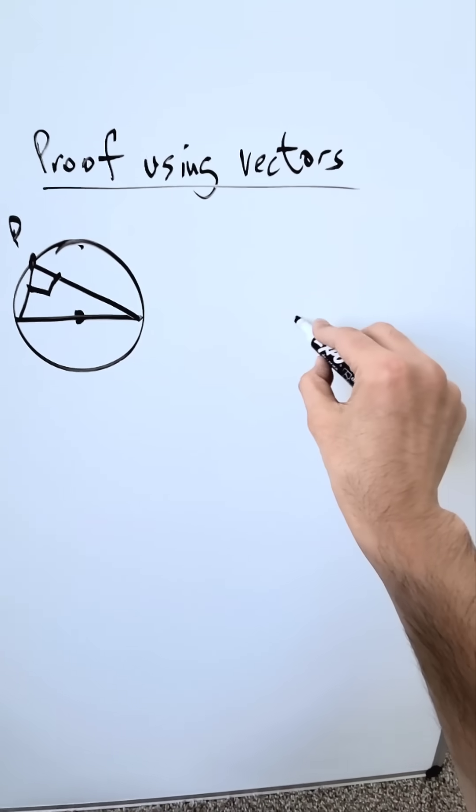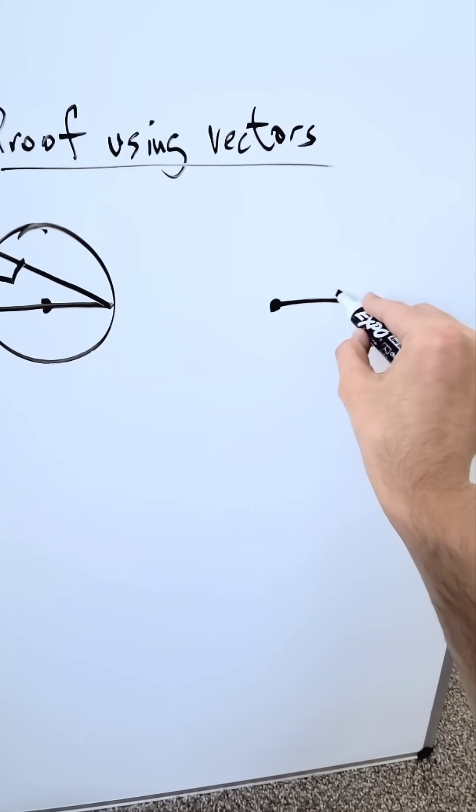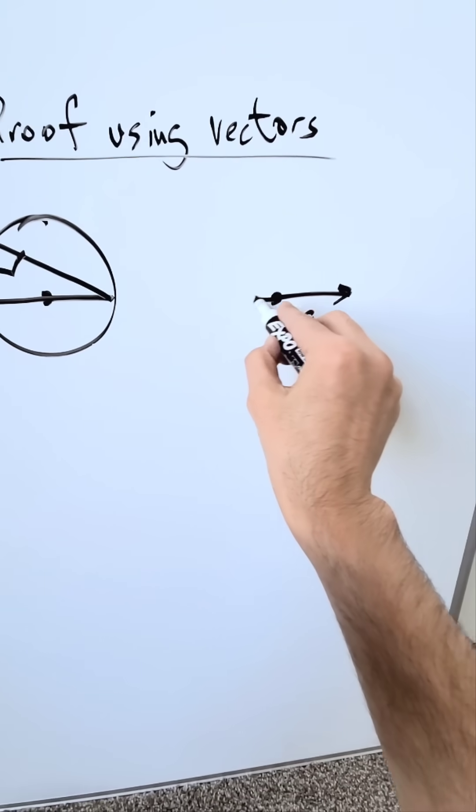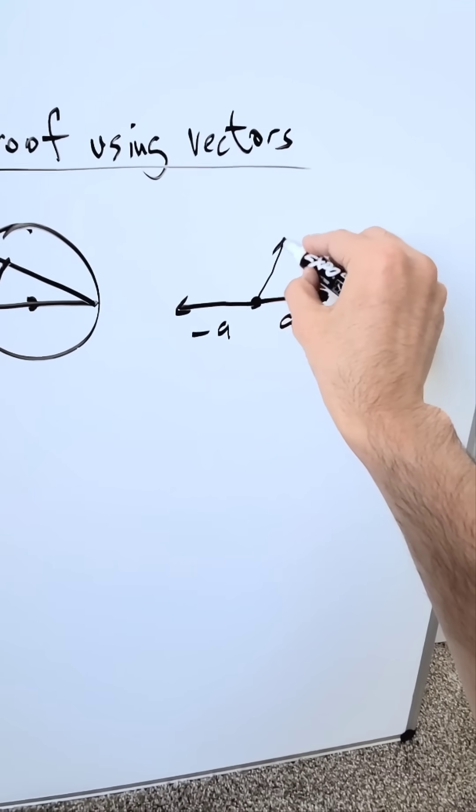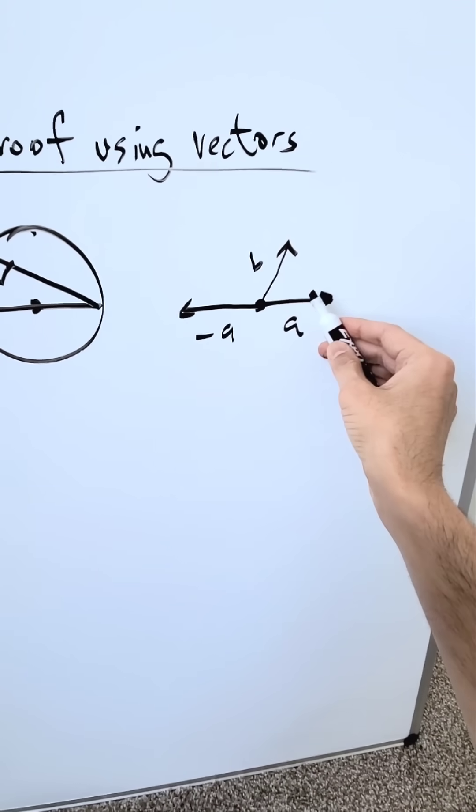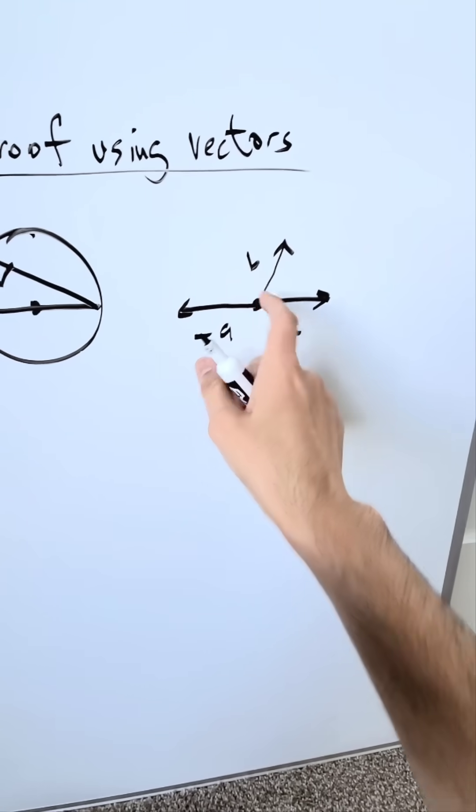We'll use vectors. Center, a vector in this direction, I'm calling that a, exact opposite vector will be minus A. These vectors are going to be radii. I'm demonstrating a third vector. It's also another radius but I'm calling this B.